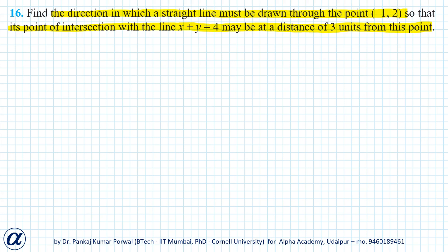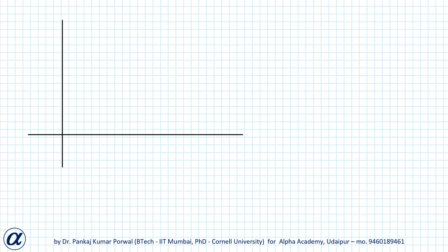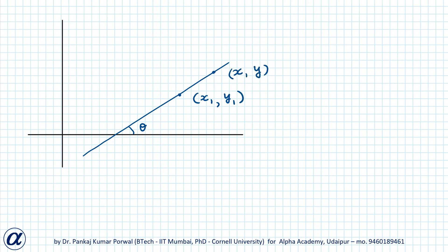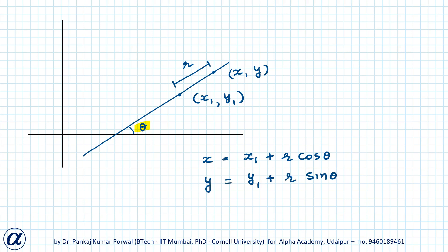It will be most convenient to solve this question using the parametric form of the equation of a line. For parametric form, let's say we have a line that makes angle theta with the positive direction of the x-axis and it passes through a point (x1, y1). Then the coordinates of any general point (x, y) on this line can be written in terms of angle theta and distance r from (x1, y1) as: x equals x1 plus r cos theta, y equals y1 plus r sin theta. This is called the parametric form of the equation of a line.